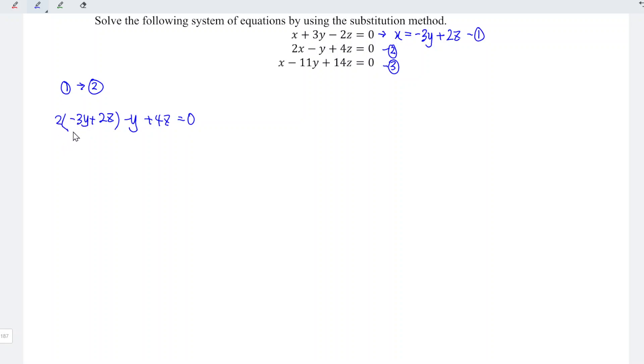We have 2 times minus 3y which is minus 6y, 2 times plus 2z so plus 4z, minus y plus 4z is equal to zero.